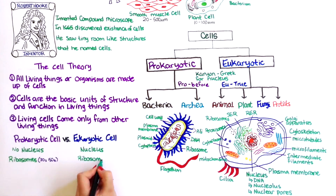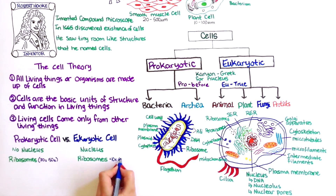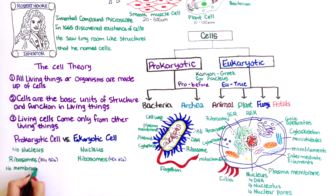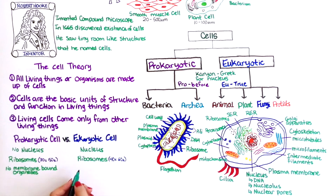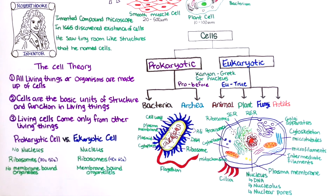while in eukaryotes it's made up of a 40S and 60S subunit. Since prokaryotic cells are relatively smaller, they don't have any membrane-bound organelles, while eukaryotic cells, which are larger, have many membrane-bound organelles.